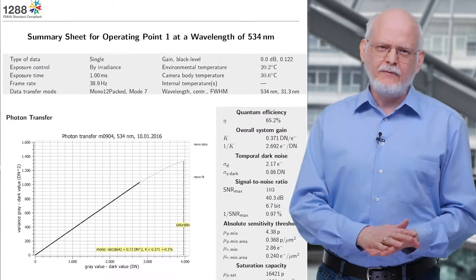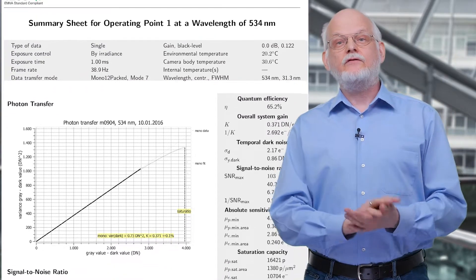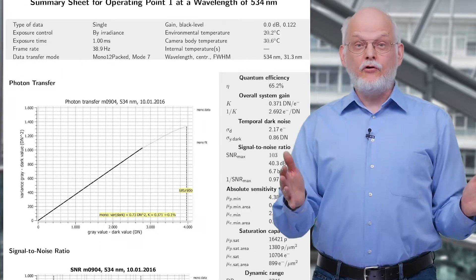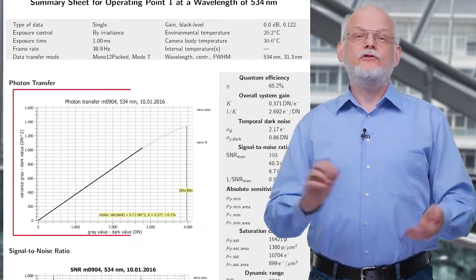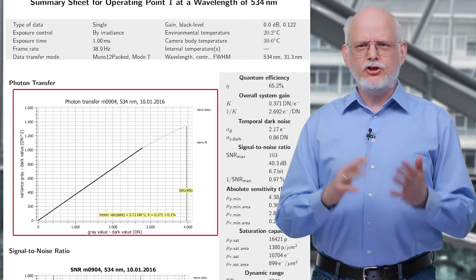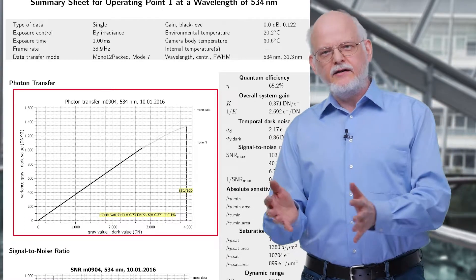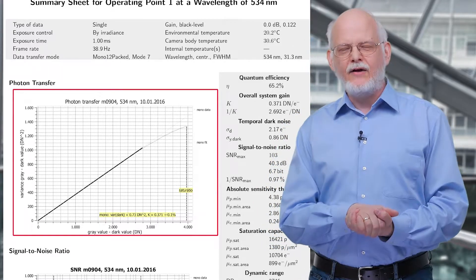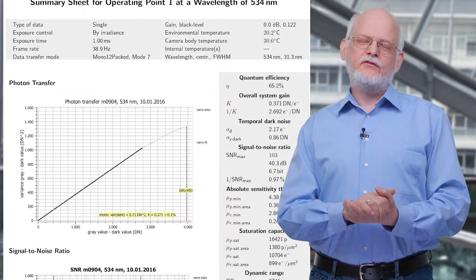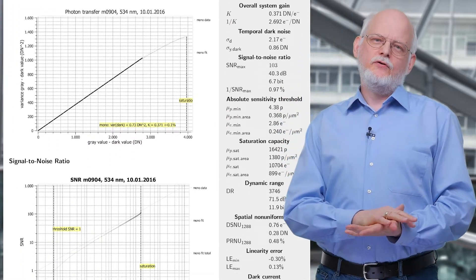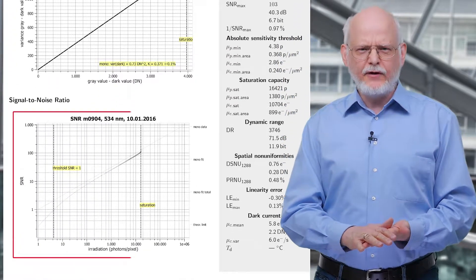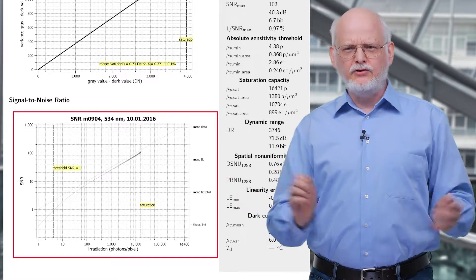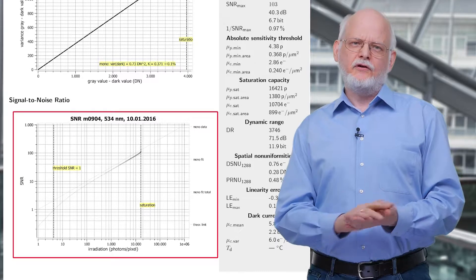Then, the summary sheet contains the two most important graphs. The first curve is the photon transfer curve, which shows you the variance of the temporal noise versus the mean digital quay value. The second one shows you the signal-to-noise ratio as a function of the number of photons used for the exposure.